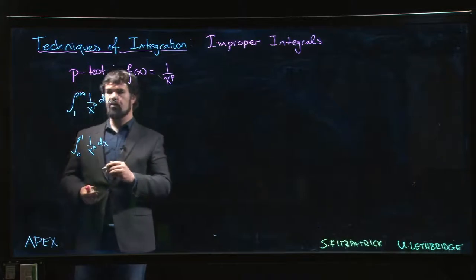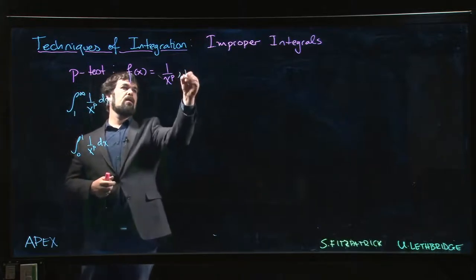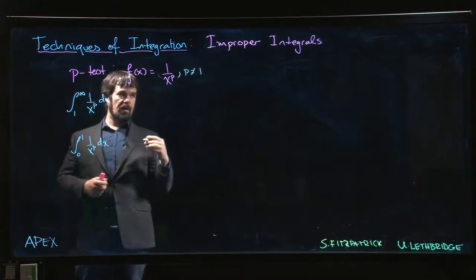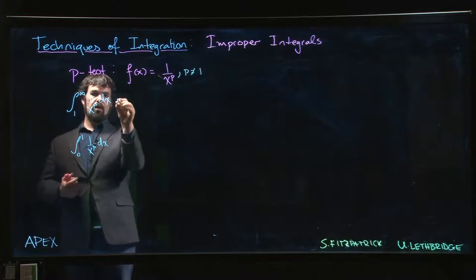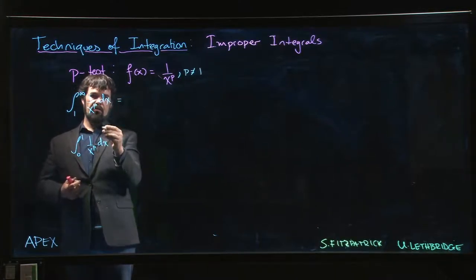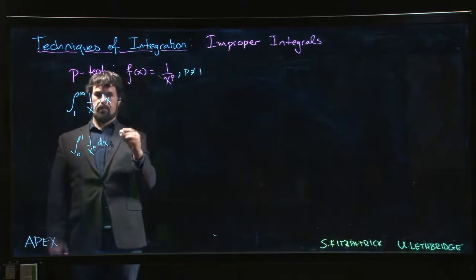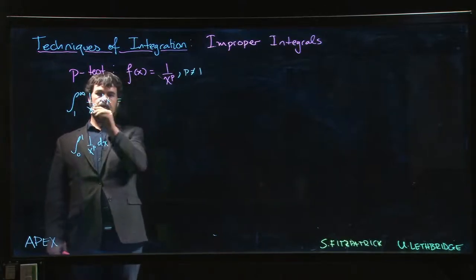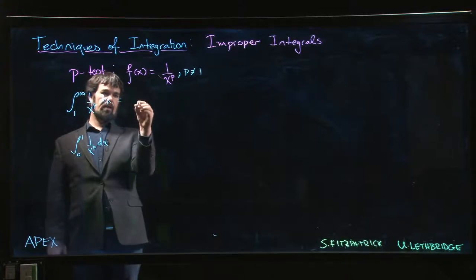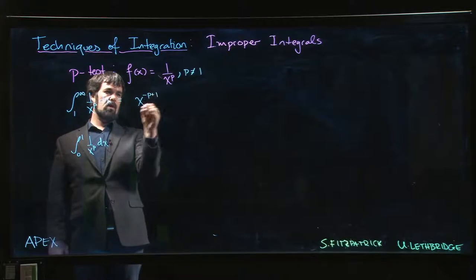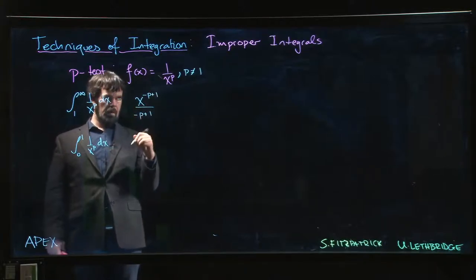Now, we're going to assume that p is not equal to 1 and see what else we can say. If p is not equal to 1, we can do a power rule integration. That's x to the minus p. So if I take the antiderivative of x to the minus p, I get x to the minus p plus 1 over minus p plus 1.